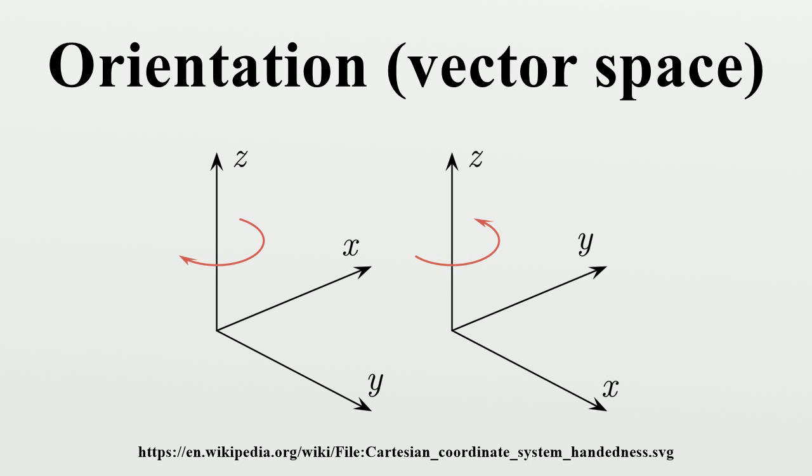A more general definition of orientation that works regardless of dimension is the following: An orientation on V is a map from the set of ordered bases of V to the set {±1} that is invariant under base changes with positive determinant and changes sign under base changes with negative determinant.